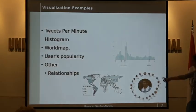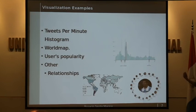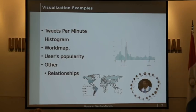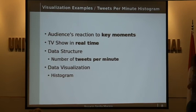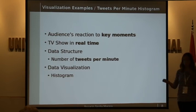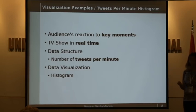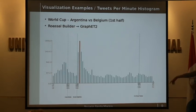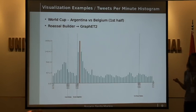Now I'm going to show you some different examples using Pharo and Rosal Framework. Some of the different visualizations are made using Rosal Builder, and for others we made our own builders. The first one is called Tweets Per Minute Histogram. It's a histogram which, for every minute, we count the amount of tweets. You can use it to see how the audience reacts to certain key moments. Here is an example where we analyzed Argentina versus Belgium, the first half of the World Cup game.